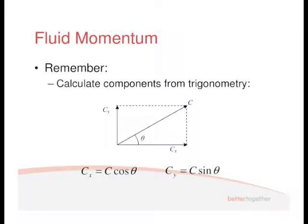There are a few things to remember. You calculate the components of velocity from trigonometry. If you know the angle theta and the value C, you can work out CY and CX. The horizontal component uses the side adjacent to the angle, so CX equals C cosine theta. The vertical component uses the side opposite the angle, so CY equals C sine theta.